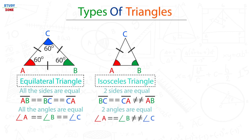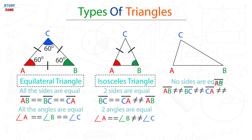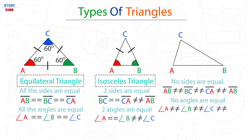This type of triangle is called an isosceles triangle. The third type is one where none of the sides are equal — AB is not equal to BC, BC is not equal to CA, and CA is not equal to AB. None of the angles are equal either — angle A is not equal to angle B, angle B is not equal to angle C, and angle C is not equal to angle A.